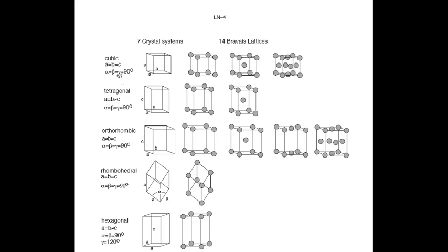The first crystal system is the cubic crystal system. The same length and height: A is equal to B is equal to C, and all angles alpha, beta, gamma are equal to 90 degrees. The origin point is at the rear left bottom. This is the simple cubic system. The second is tetragonal: A is equal to B, but the height is C, and angles alpha, beta, gamma are all 90 degrees.